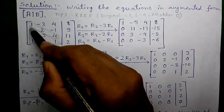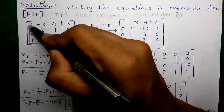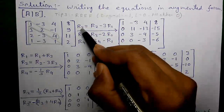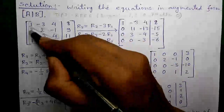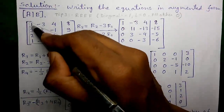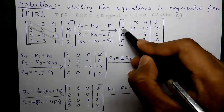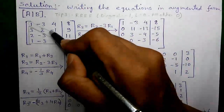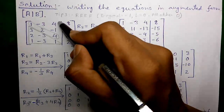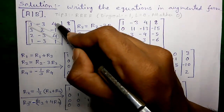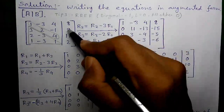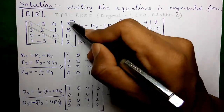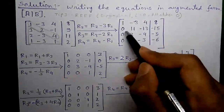To get a zero at this position in row 2, we multiply row 1 by 3 and subtract from row 2: R2 = R2 − 3·R1. So: 3 − 3 = 0; 2 − (−3)×3 = +11; −1 − 4×3 = −13; and 9 − 8×3 = −15. This is our new row 2.